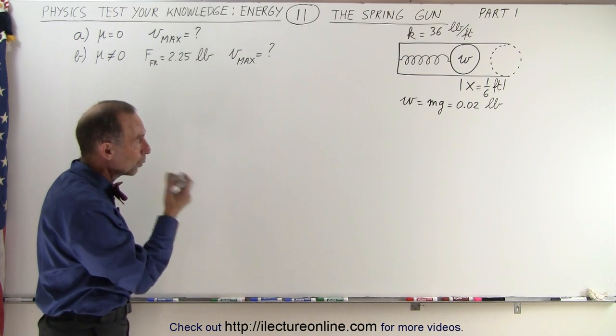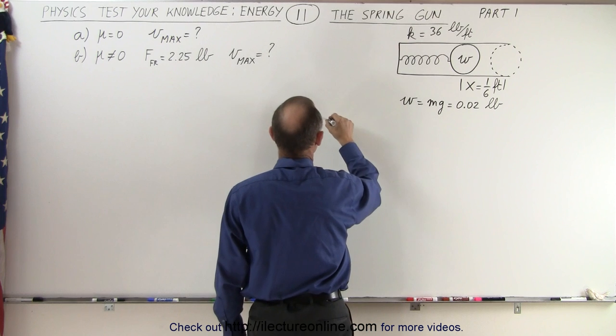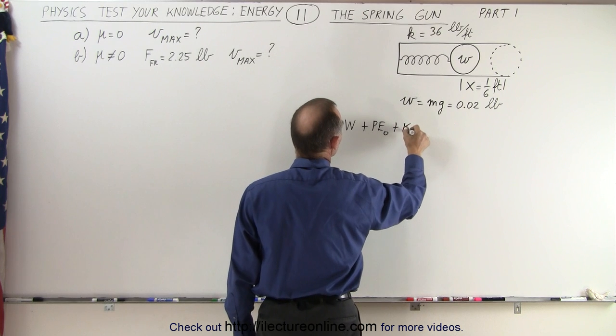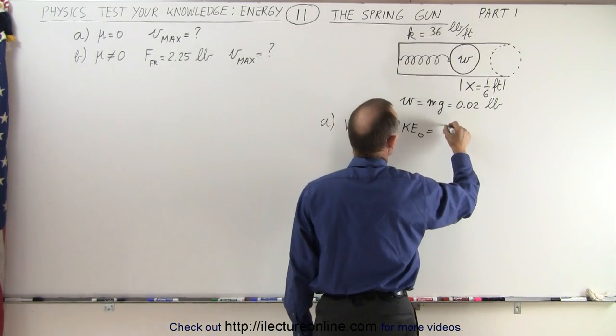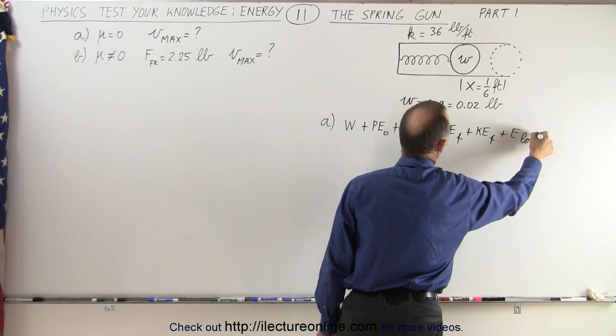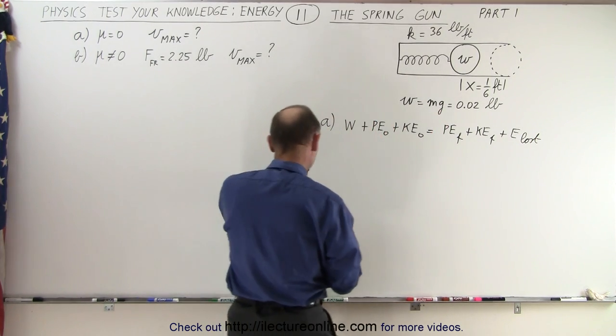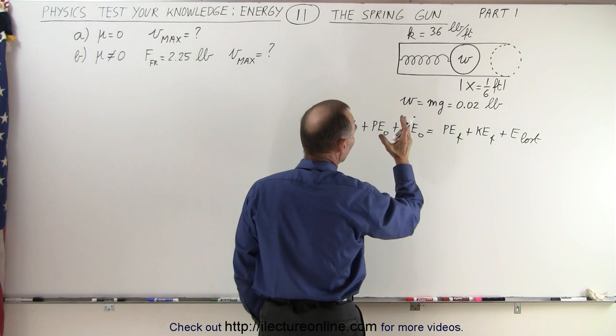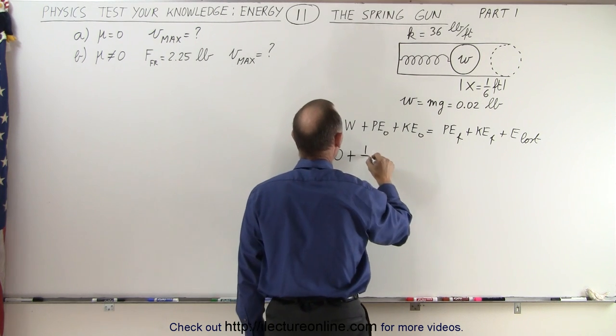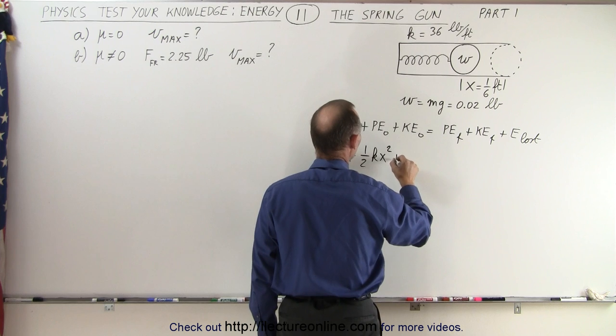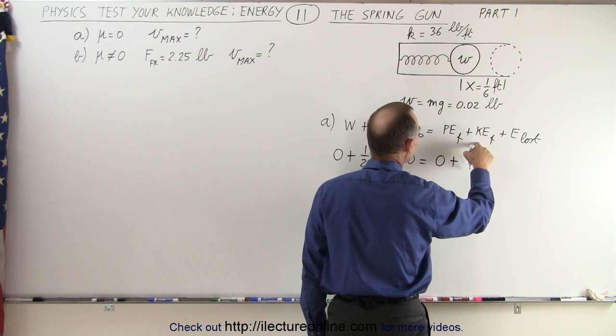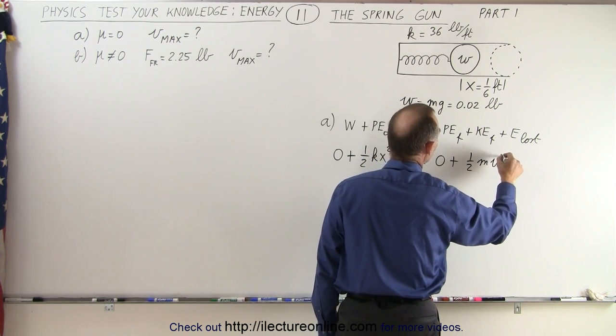So how do we do that? Let's go ahead and use the energy equation for part A. We can say that any work put into the system plus any initial potential energy plus any initial kinetic energy must equal the potential energy final plus the kinetic energy final plus any energy lost due to friction. Of course in part A there's no friction. So we could say that there's no work put into the system because we're starting it when the bullet is in location, plus the initial potential energy, that would be one half kx squared, plus the initial kinetic energy which is zero, plus the final potential energy would be zero, plus the final kinetic energy would be one half mv squared.